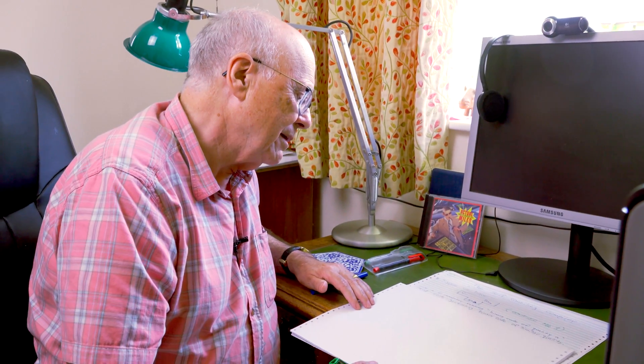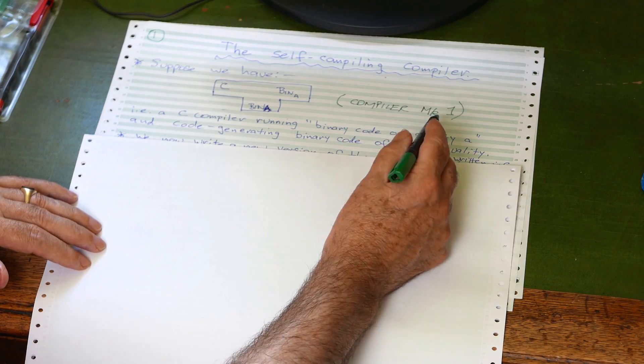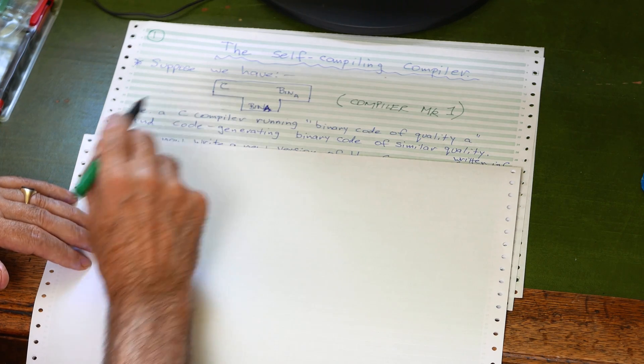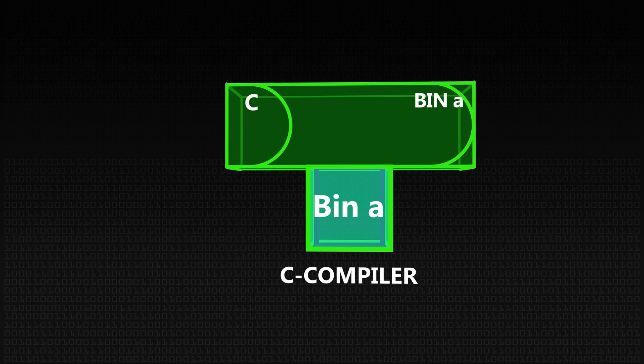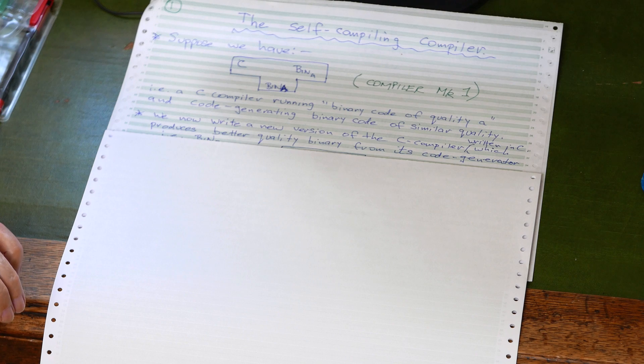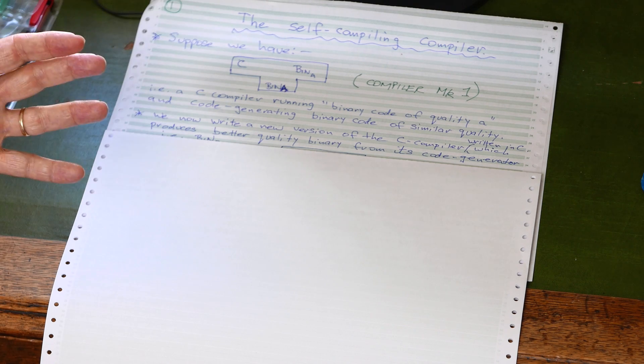We're going to do something very similar here. Ideally, I'd like to make bin A be history and a thing of the past, because I'd like to write a new version of the compiler — which we will call Mark 2. This is a compiler running binary code of quality A at the moment and code-generating binary of a similar sort of quality. We now write a new version of the C compiler, still written in C, which produces better quality binary. We pay a lot of attention to the code generation modules. We'll call it bin B — version 1 is A, version 2 is B, or you can think of the B as meaning better, best-quality binary in some sense.